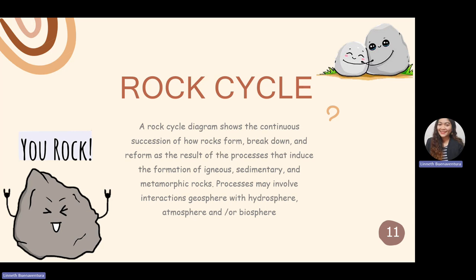Let's define what the rock cycle is. The rock cycle diagram shows the continuous succession of rocks formed. It is a process that shows rock formation, how rocks break down, and reform as a result of deep geological processes that induce the formation of three types of rocks: igneous, sedimentary, and metamorphic rocks. These processes may involve interaction in our geosphere along with the hydrosphere, atmosphere, and biosphere.